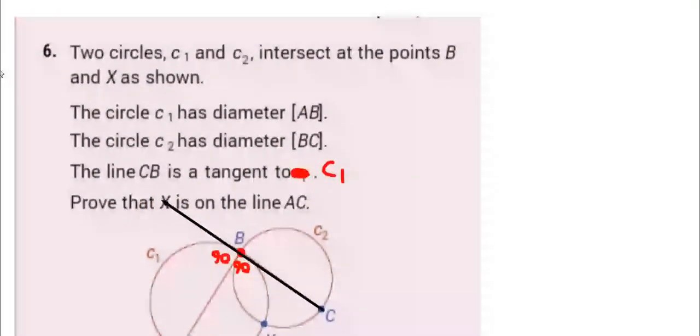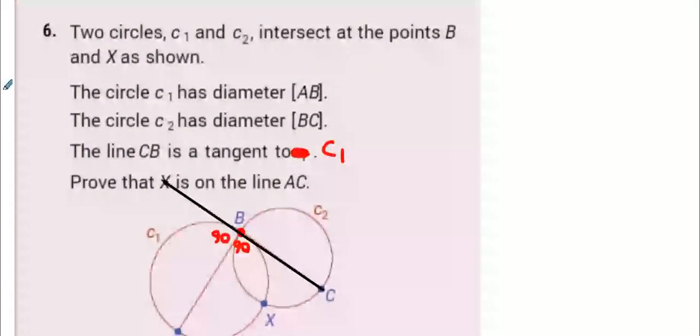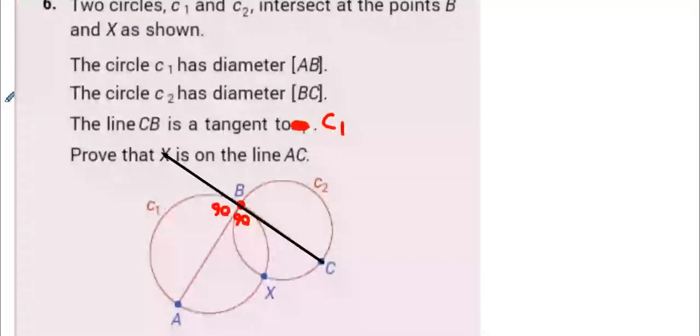Two circles C1 and C2 intersect at points B and X as shown. Circle C1 has diameter AB, circle C2 has diameter BC. The line CB is a tangent to C1. Prove that X is on the line AC.